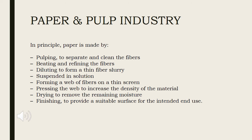Pulping is the process to separate and clean cellulosic fibers. The second step is beating and refining the cellulose fibers. Third is diluting to form a thin fiber slurry. Fourth is suspending this fiber slurry in solution. Then forming a web of fiber on a thin screen, pressing the web to increase the density of material, drying to remove remaining moisture, and finishing to provide a suitable surface for the intended end use.